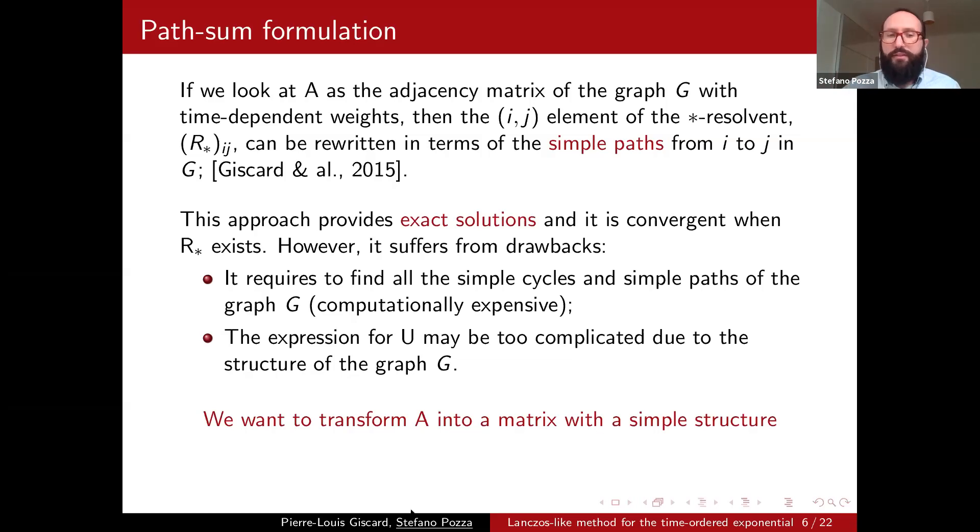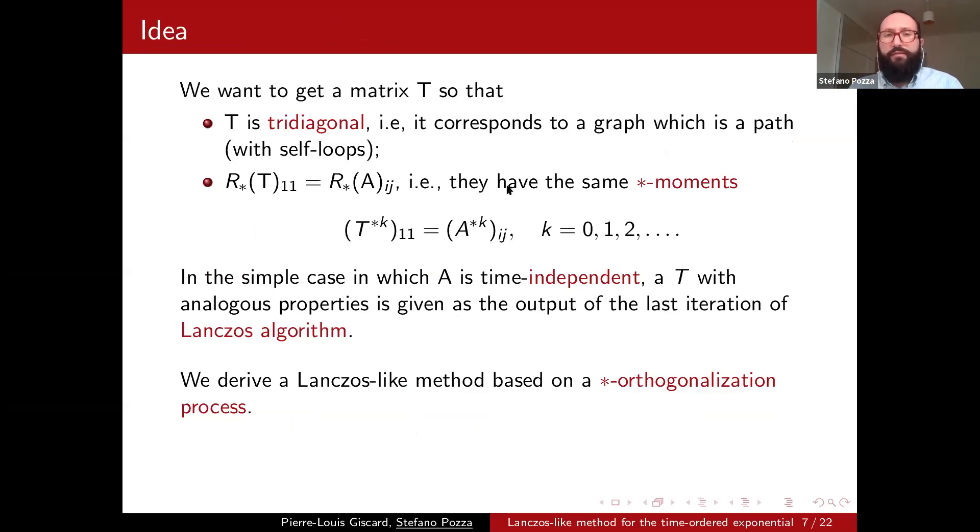So our goal is to transform the matrix A into a matrix with a really simple structure so that then we can use this path-sum formulation. And the idea we are following is actually to take the easiest matrix we could find in the sense that T is a tridiagonal matrix, so that then we get a really straightforward formulation for its resolvent. And then we want another property, and that is that the ij element of the star resolvent of A must be equal to the first element of the star resolvent of T.